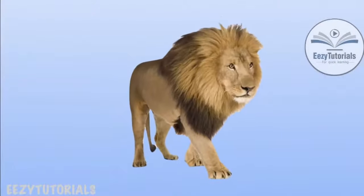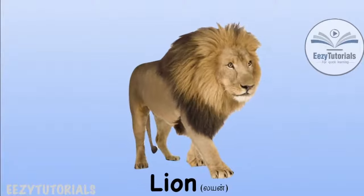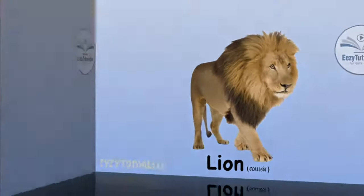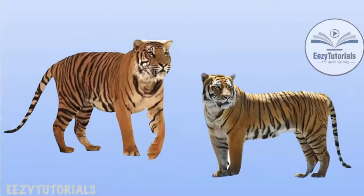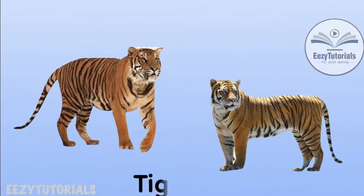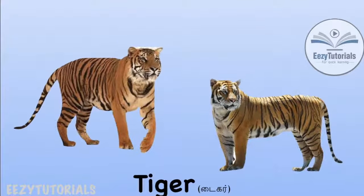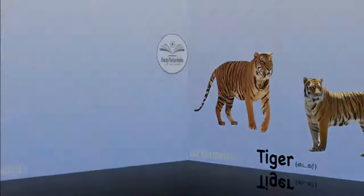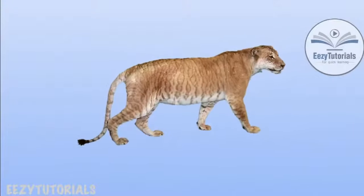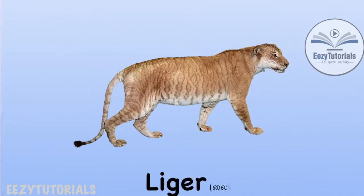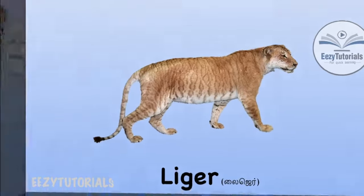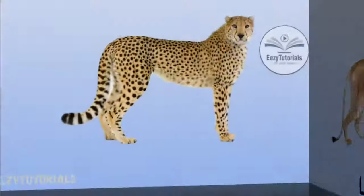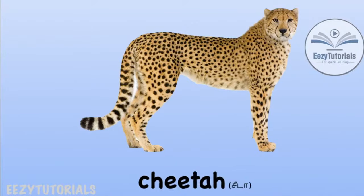This is the king of the jungle. The national animal of India. This animal is a hybrid of lion and tiger. This animal can run very fast — Cheetah.